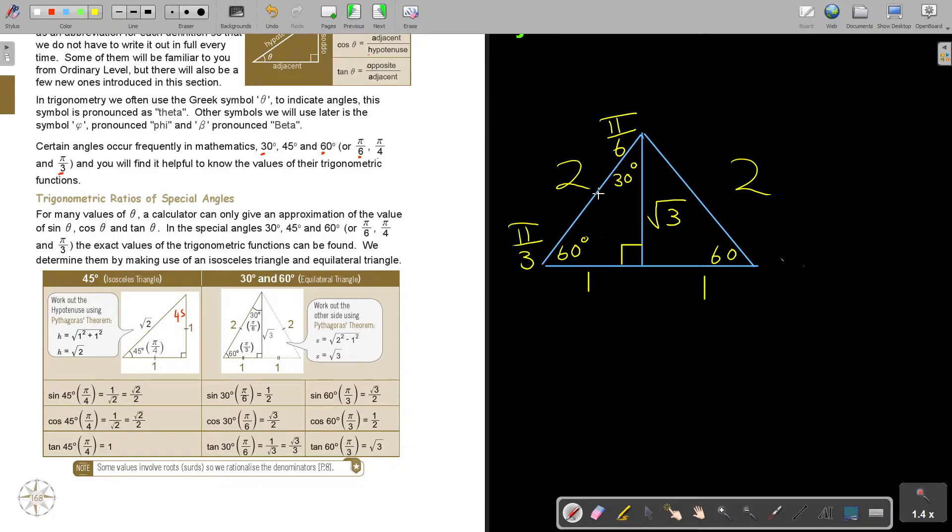And then you can work out all the functions. You can start by working from the 30. So if I say sin, it's opposite over hypotenuse, and there's my half. And then cos is adjacent over hypotenuse, and there's my value. And then tan is opposite over adjacent, and I rationalized again my denominator. And the same with sin for the 60 degree angle.